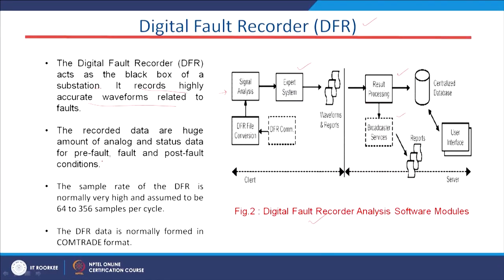The DFR records voltage and current waveforms during the fault inception period, accurately identifying at what point a fault was incepted in a particular line, device, transformer, generator, or feeder. The recorded data — a large amount of analog and status data for pre-fault, fault, and post-fault conditions — can be used for further analysis.